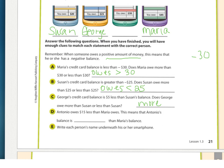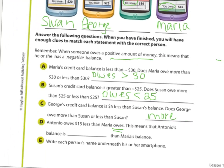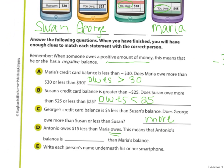The last clue: Antonio owes 15 dollars less than Maria owes. Here we're talking about what is owed. Antonio owes 15 less than Maria, so his balance is greater than Maria's because he owes less. That would be Antonio. This is very tricky wording, so be careful.